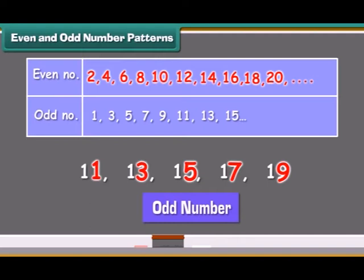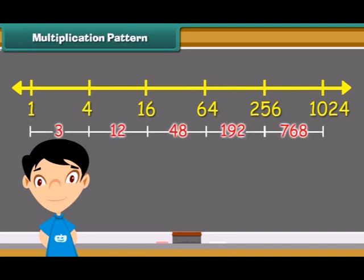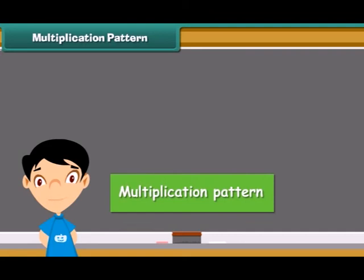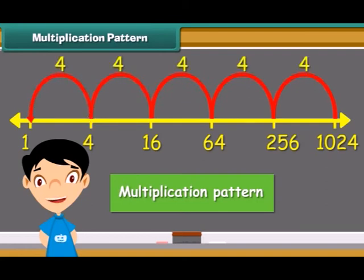Look at the pattern given here: 4, 16, 64, 256, 1024. The differences between two numbers in the series are varying. The difference is 3, 12, 48, and 192. This means they do not follow addition and subtraction pattern. The pattern followed is called multiplication pattern. In this pattern, the next number is obtained by multiplying the number by 4.